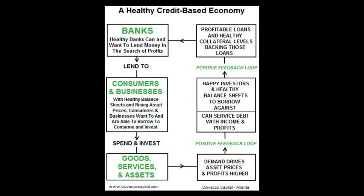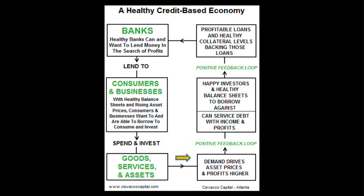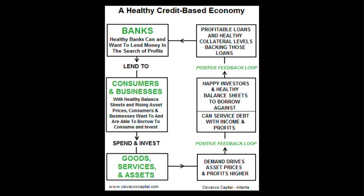This chart shows a healthy credit market and economy. Banks lend. Consumers and businesses borrow to invest and consume. Demand, based upon available credit, boosts asset prices and profits. As asset prices rise, balance sheets strengthen. With healthy balance sheets, businesses and consumers feel wealthy, and thus borrow more, invest more, and consume more. This is known as the wealth effect.